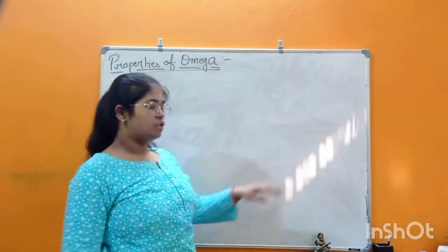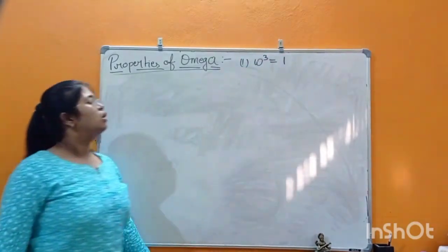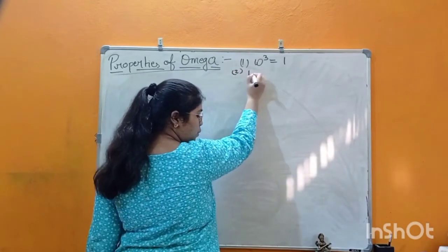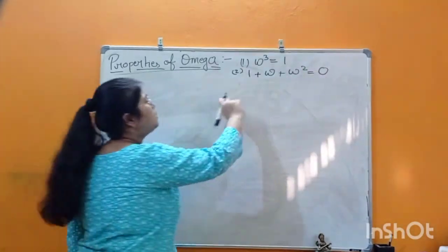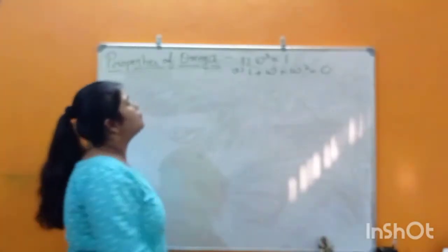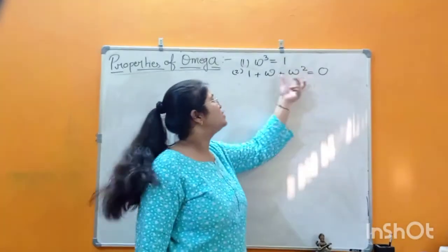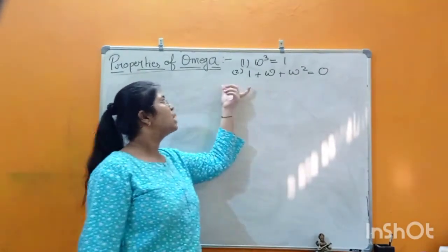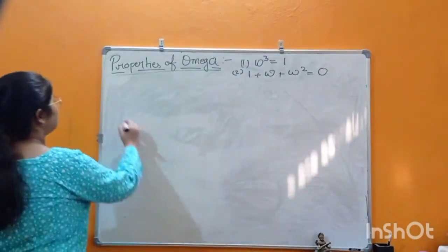Now the properties of omega. The first property is: ω³ = 1. The second property is: 1 + ω + ω² = 0. These are the two fundamental properties of omega. The first tells us the cube of omega is 1; the second tells us the sum of all three cube roots of unity equals zero.